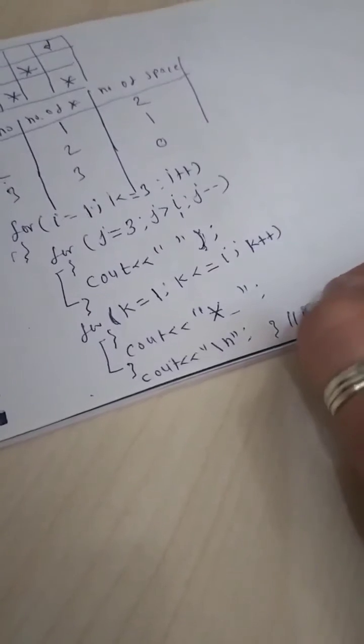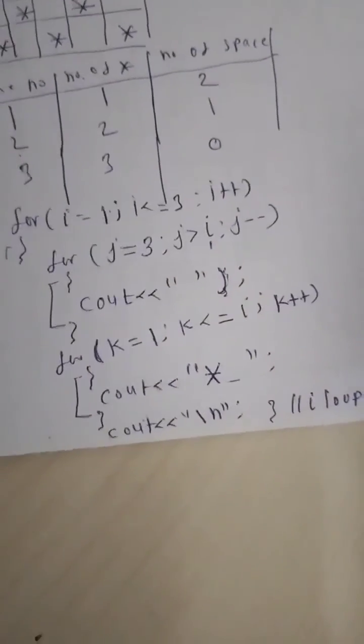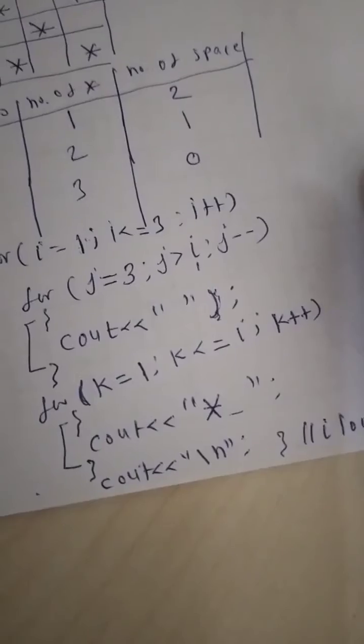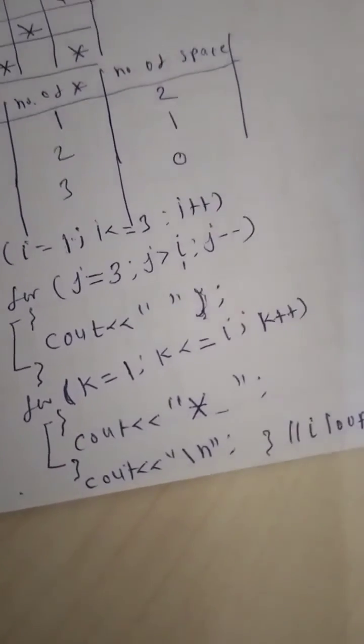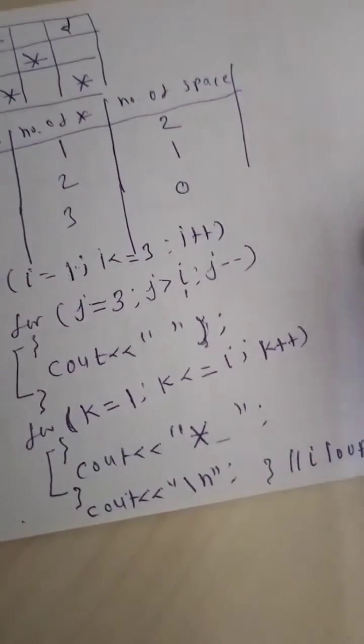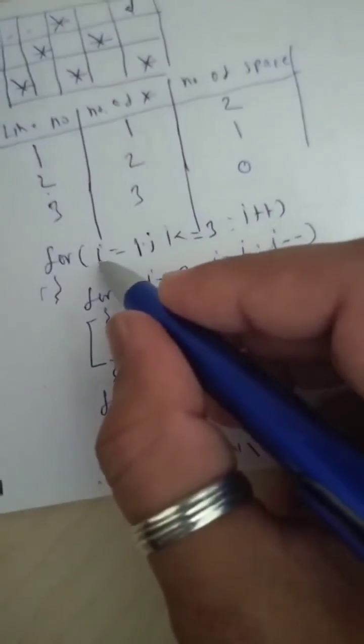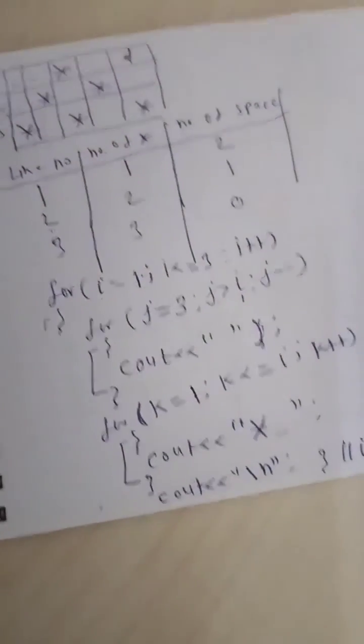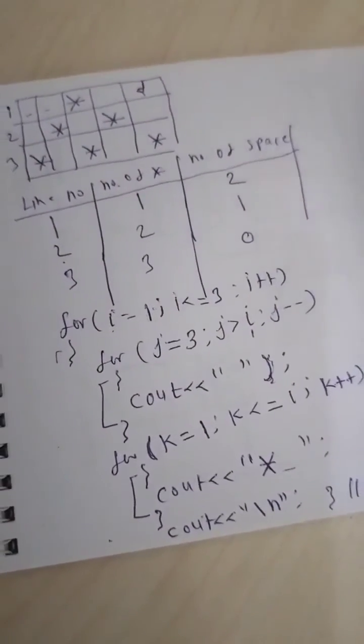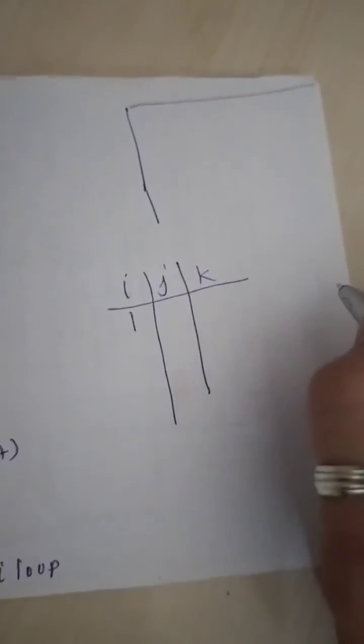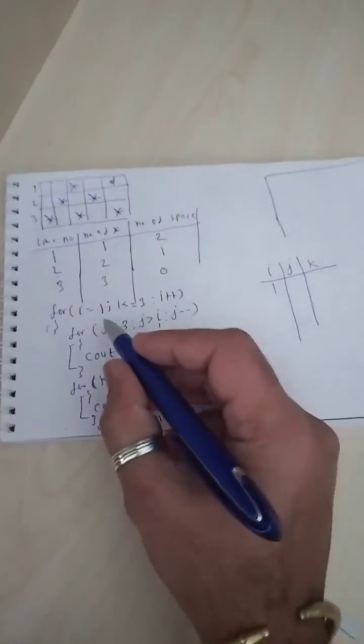Now I will trace this program. I am having three variables: I, J, and K. I have my output screen and my trace table. Let's start the tracing. First, i equals to 1.